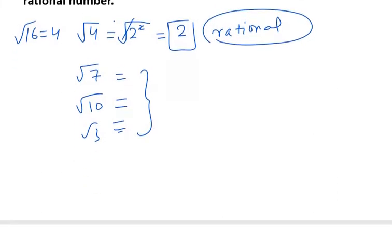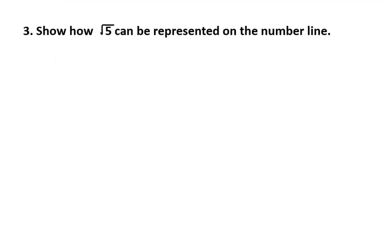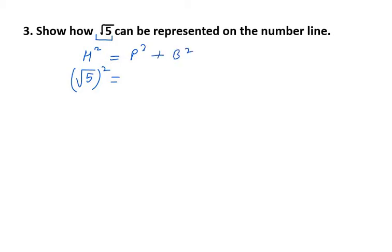Moving on to question 3: we need to show that √5 can be represented on a number line. To represent √5 or any irrational number on a number line, we use the Pythagorean theorem. We consider √5 as the hypotenuse, so hypotenuse² = perpendicular² + base².